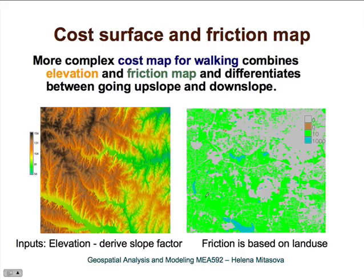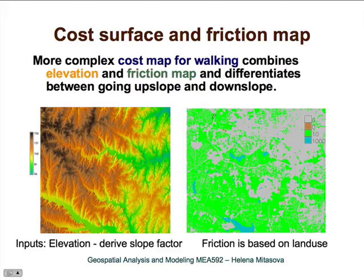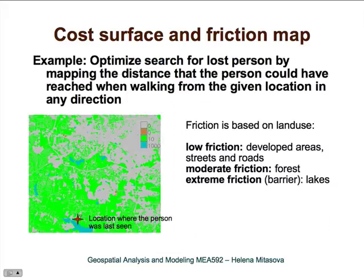A cost map can be even more complex — more information can be added. Here is an example where we combine elevation information and a friction map based on land use to create a cost map for walking. We are trying to optimize the search for a lost person last seen at a given location, and we need to find out how far that person could have gone — so we can redirect resources to areas where that person might be, and avoid searching areas they couldn't have reached.